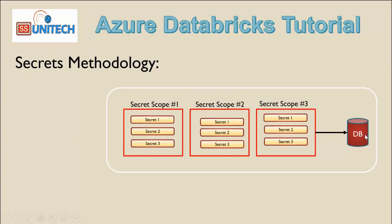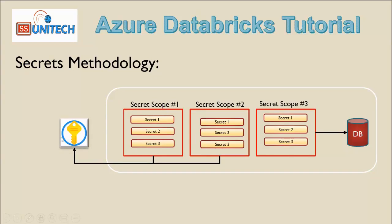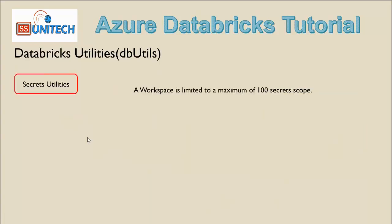Inside the secret methodology, we can store secrets inside the Azure Key Vault or Databricks secret scopes. We can have multiple secret scopes — for example, scope one, two, and three — and these connect with the database. Earlier there was no intermediate layer to secure credentials; we connected directly. The secret utility workspace is limited to a maximum of 100 secret scopes.